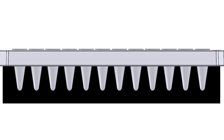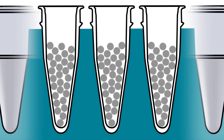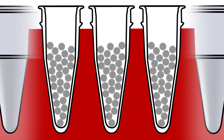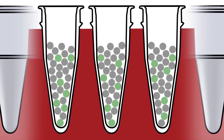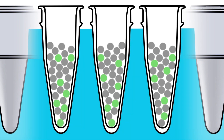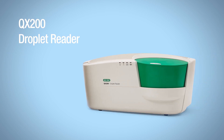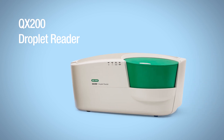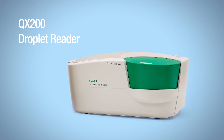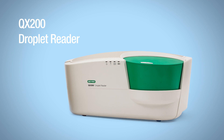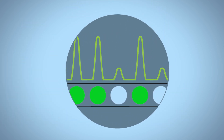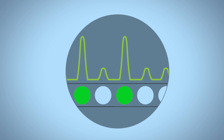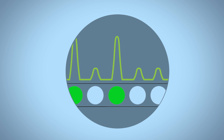After droplet generation, plates containing droplets are thermal cycled to endpoint. During PCR, targets are amplified within each individual droplet. When PCR is finished, the QX200 Droplet Reader counts droplets as either positive or negative with unrivaled precision. PCR droplets containing targets count as positive and those without targets as negative.